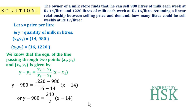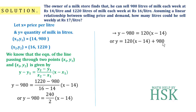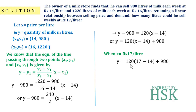Subtracting gives 240 over 2, which simplifies to 120. So y − 980 = 120 × (x − 14), or y = 120(x − 14) + 980. This is the linear relationship between the rate x and the demand y. When x = 17, the demand is 120 × (17 − 14) + 980 = 360 + 980 = 1340 liters. So this is the required answer.